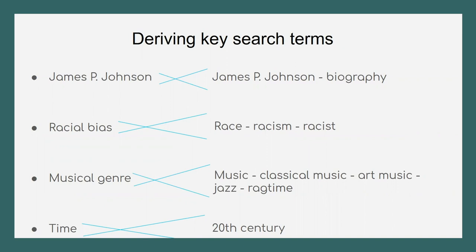We can also add the term biography next to his name. Our concept of racial bias can be broken down into race, racism, and racist. Musical genre is about music, but more specifically classical music, art music, jazz, and ragtime. Our final concept of time is defined by the context of our topic, which in this case is the 20th century.